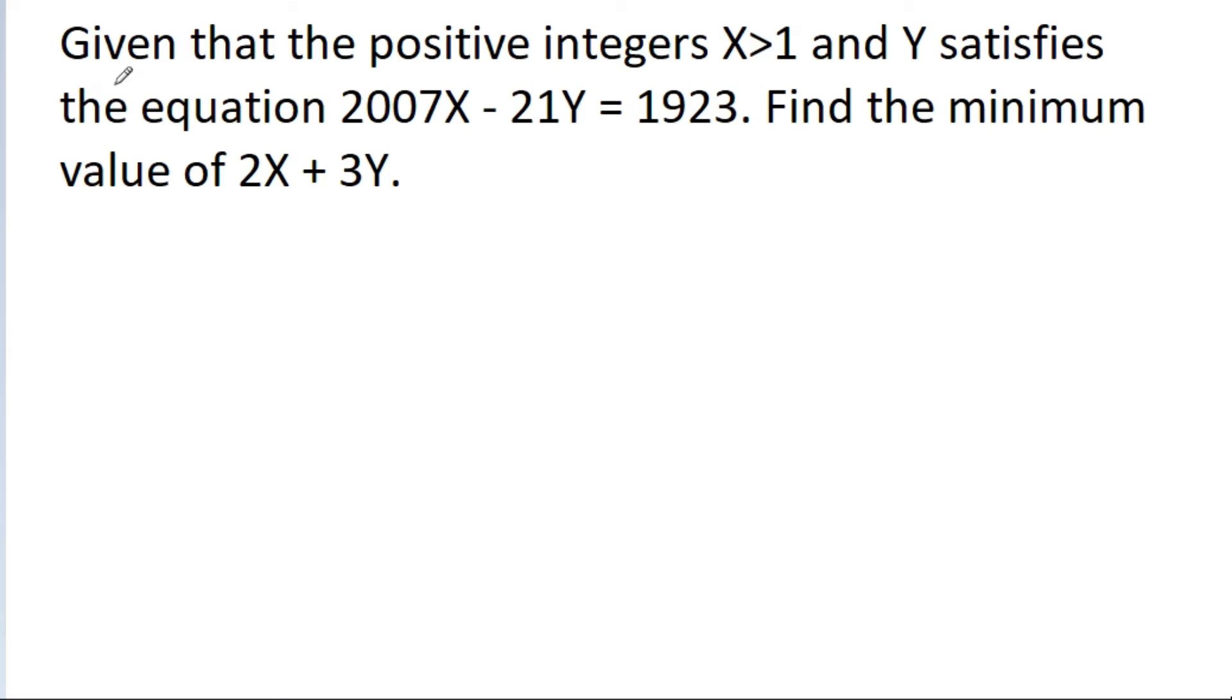In this video, we have given that the positive integers x greater than 1 and y satisfies the equation equal to 1923. Then we have to find the minimum value of 2x plus 3y.